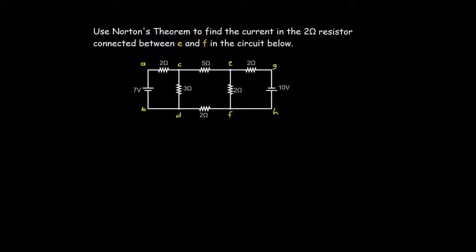So first of all, what you have to do is take out the two-ohm resistor from the circuit. Then you calculate the short-circuit current. After that, you calculate Norton's resistance. Now, looking at this circuit, there are two voltage sources, so I am going to apply the superposition theorem to find Norton's current.